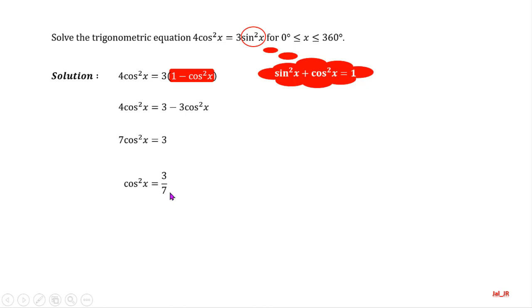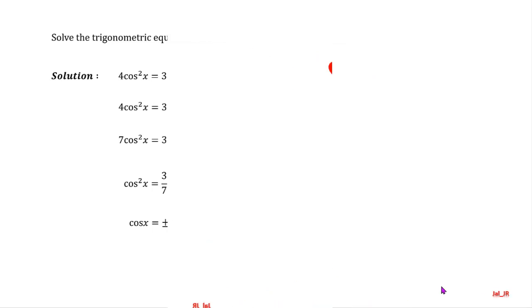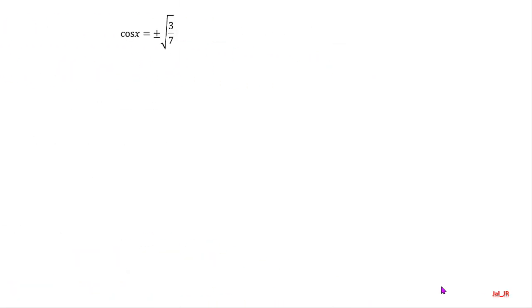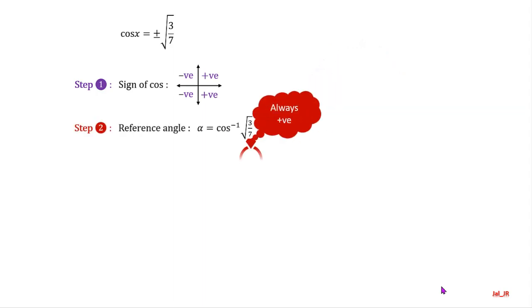Take the square root on both sides. We have cosine of x equal to plus or minus the square root of 3 over 7. These are basic trigonometric equations. Follow the steps of solving basic trigonometric equations. First step: the solutions are in all four quadrants. Second step: the reference angle is 49.1 degrees.